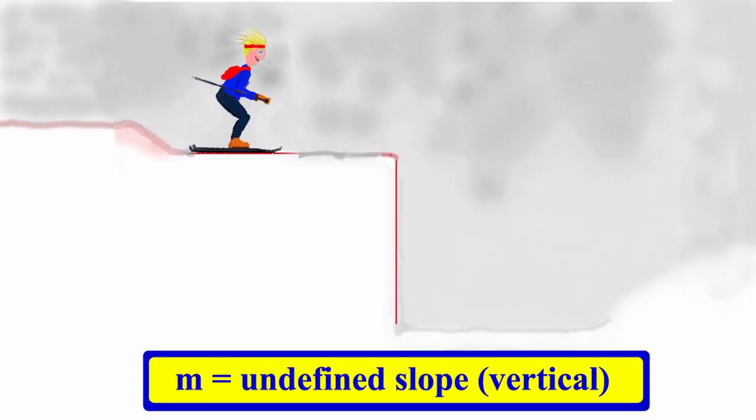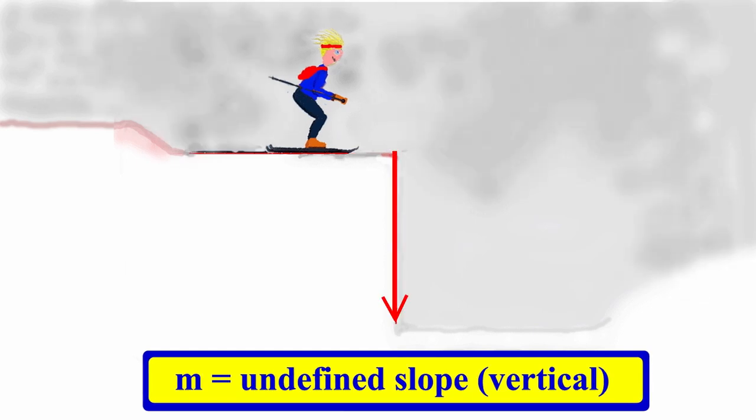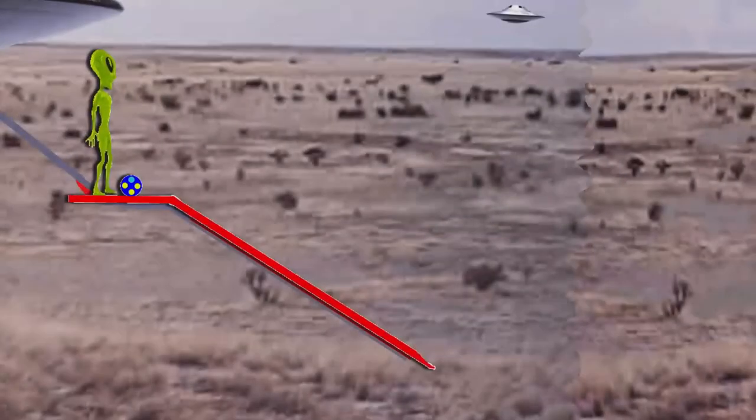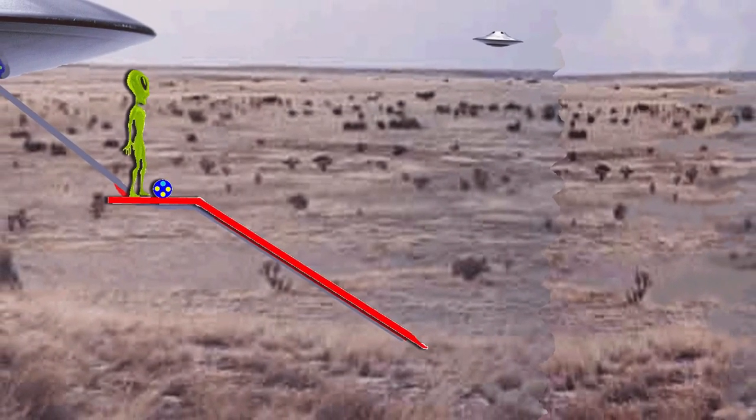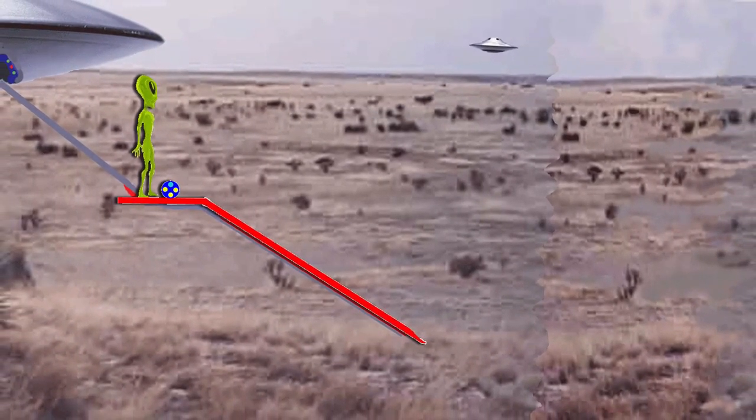The second type is the undefined slope. This is a vertical line and produces a skiing experience that is undefined.